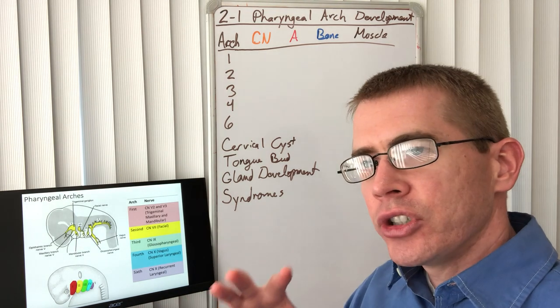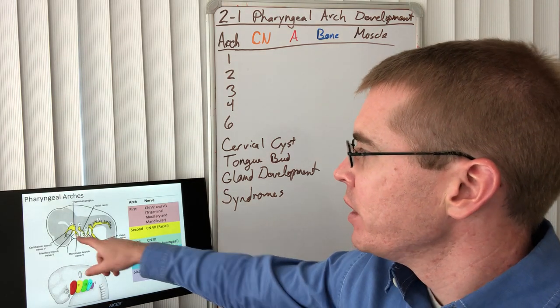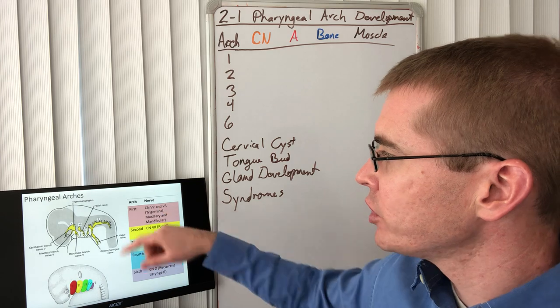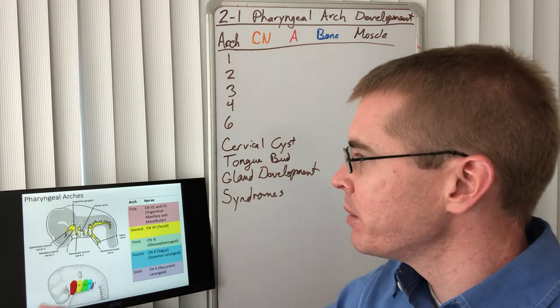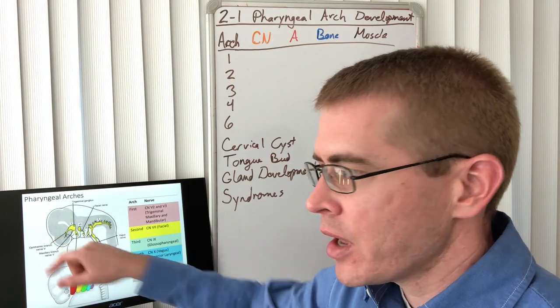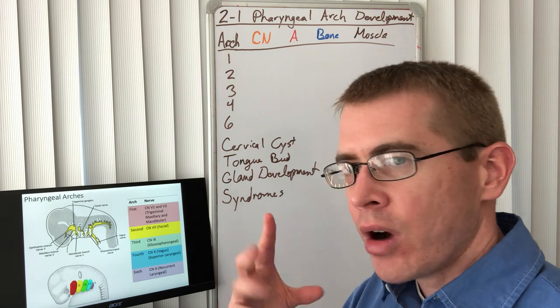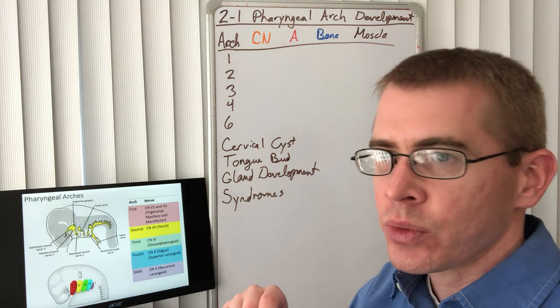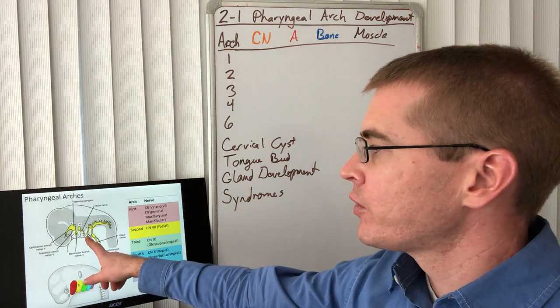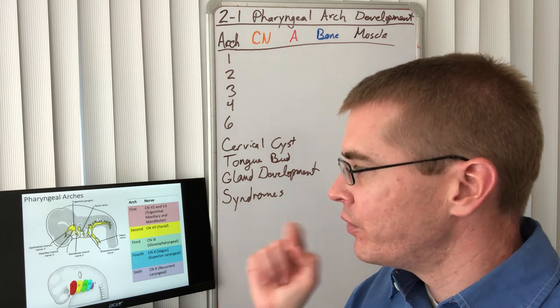So let's just go through these arches and talk about what they end up forming. The first arch we see here is going to end up forming mostly V3, the mandibular branch, with also some of the maxillary portion of V2. But remember, the frontal prominence, that main arch forming the forehead, it's going to receive components of V1. So obviously V1 is not a part of the first arch, that's why it's not listed. The second arch ends up forming facial nerve.